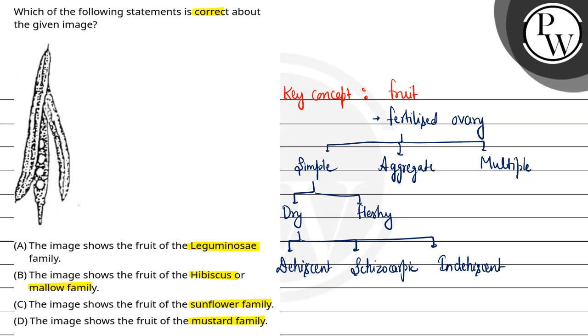Now in the image, the fruit being shown looks like a dry fruit, plus it is dehiscent. In it, we can see the septum in the center, and on both sides it is opening. Both sutures are breaking.